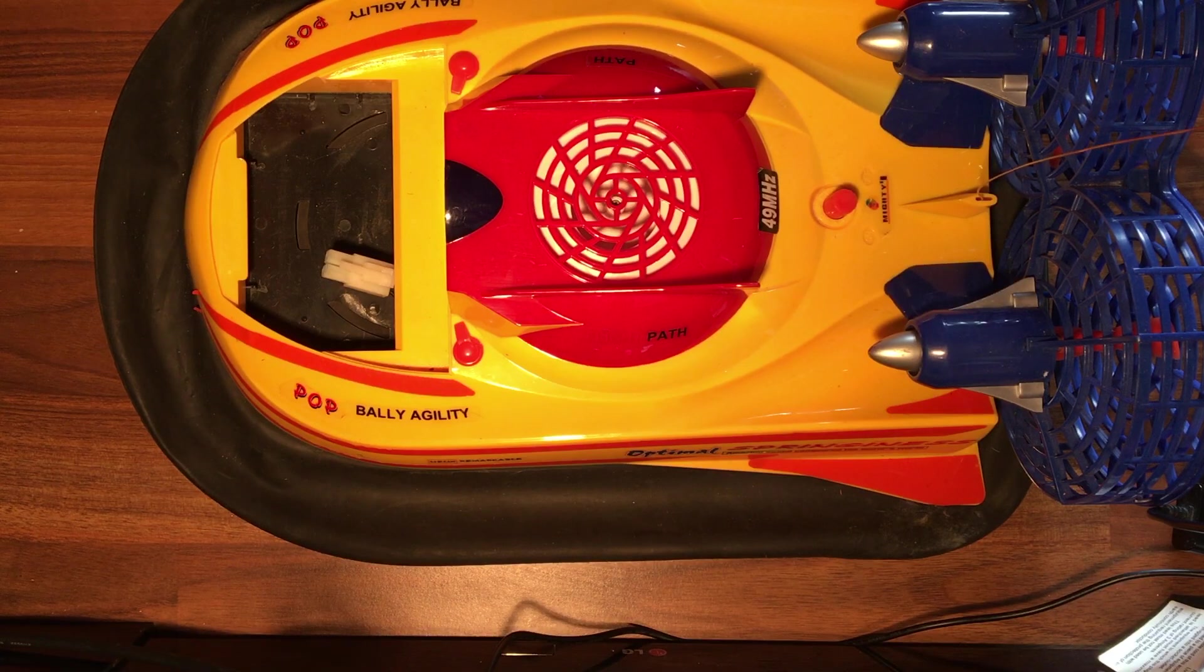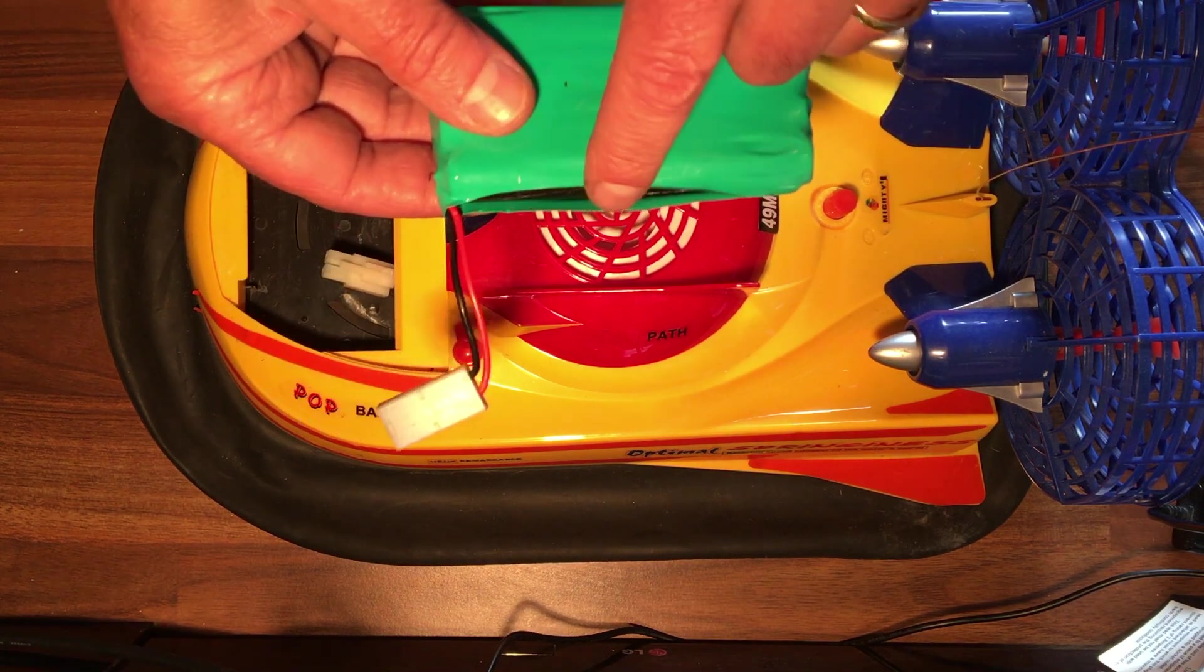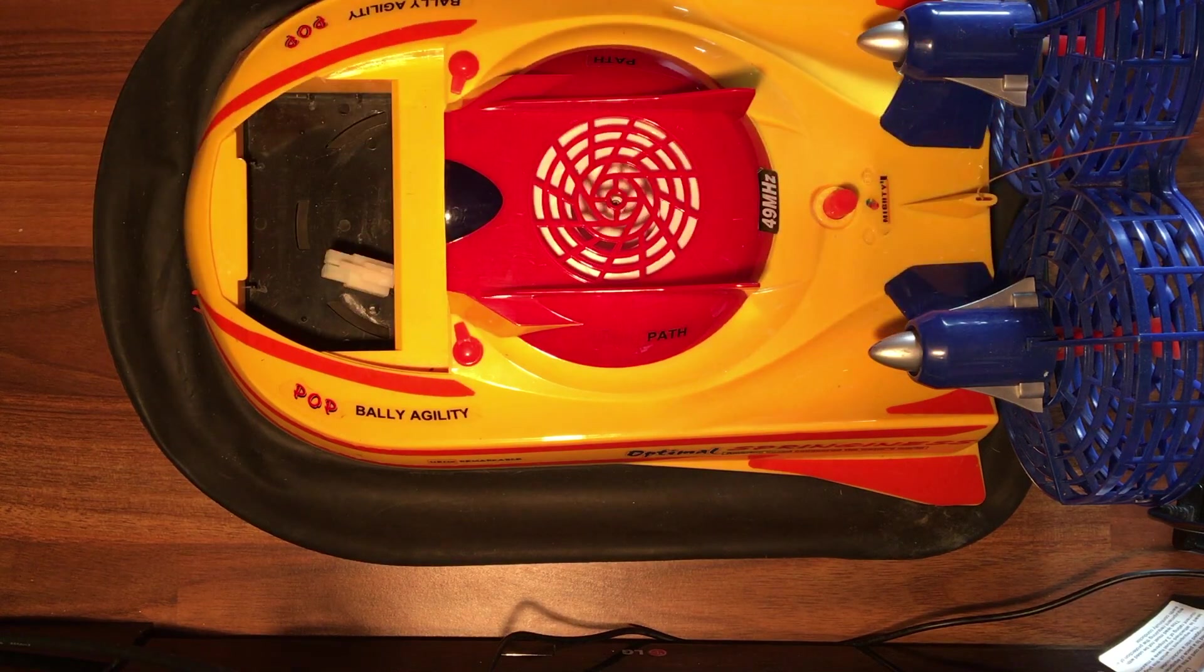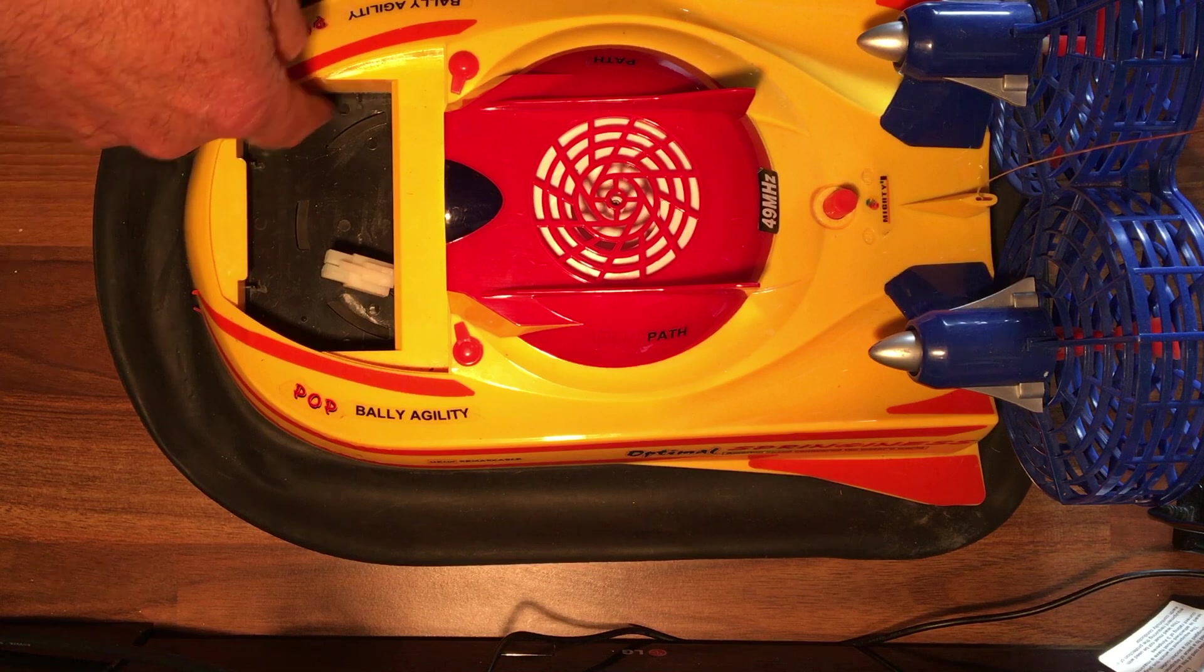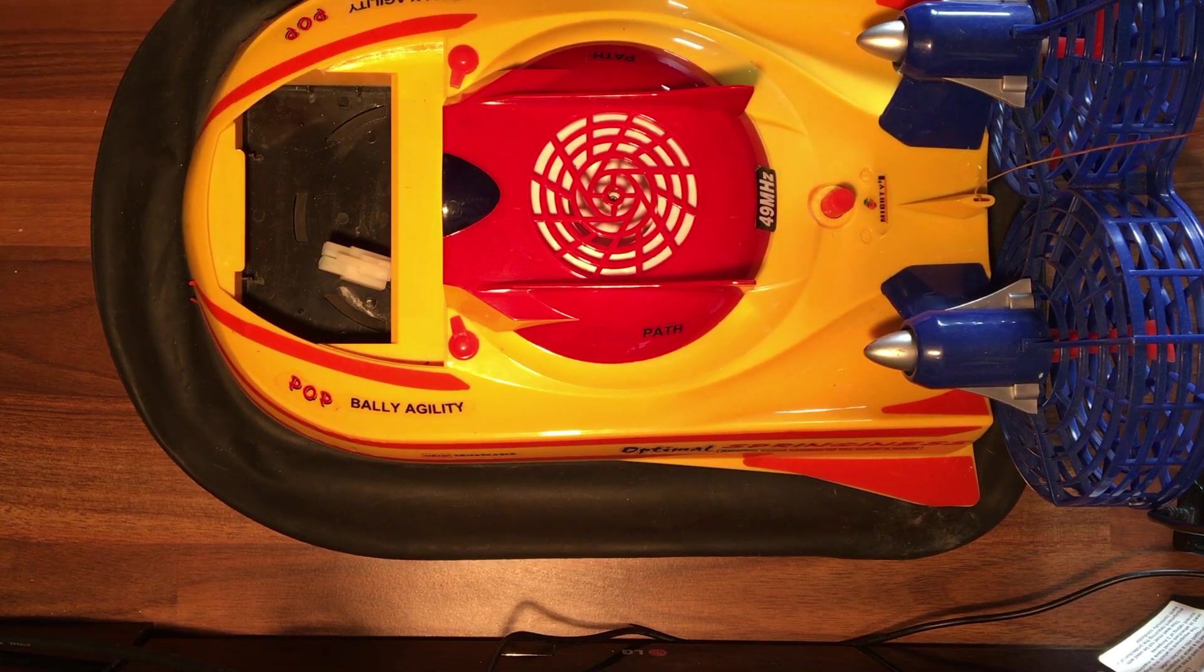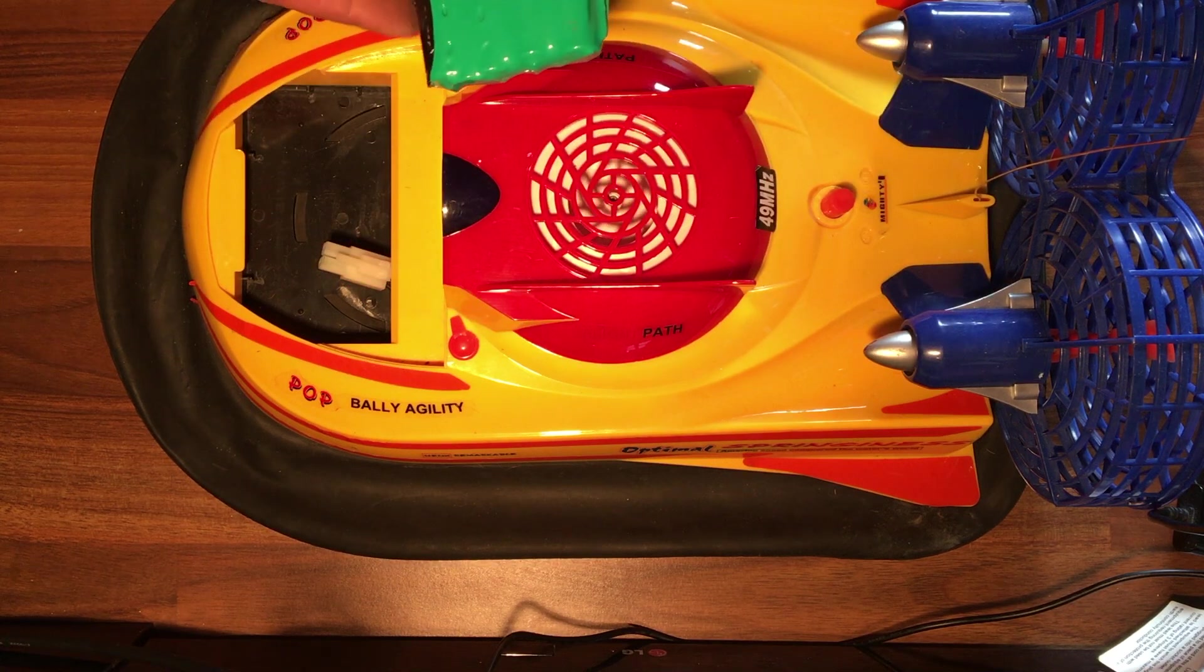Okay, so here we have the little hovercraft and what we're doing is we're going to fit the battery pack. Now I've had to trim around the edges here as it was overlapping and catching. There's little stops inside in the compartment for the other battery pack which is ever so slightly smaller.